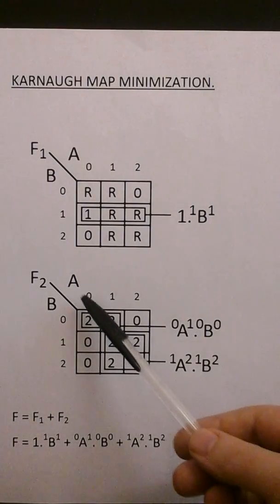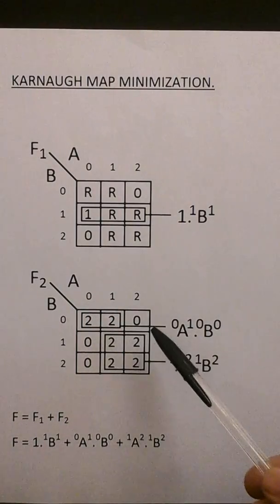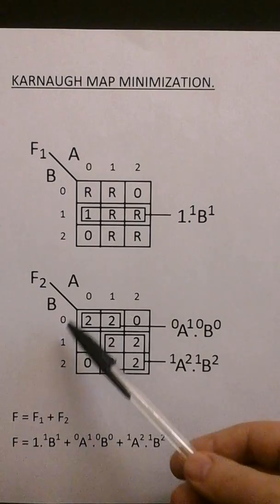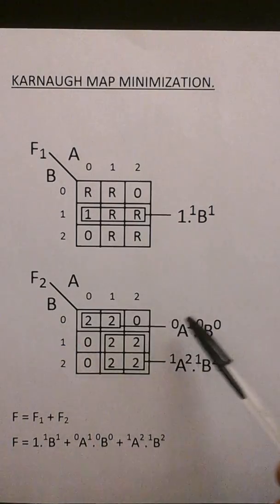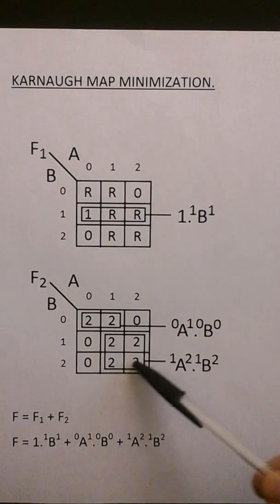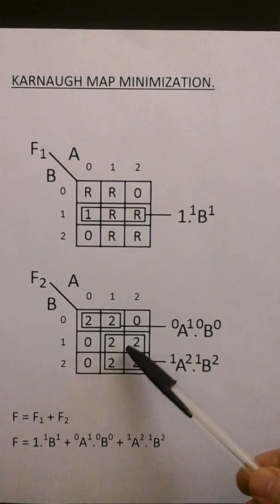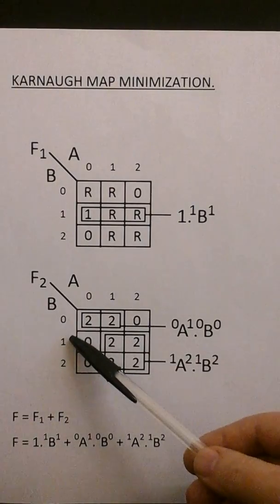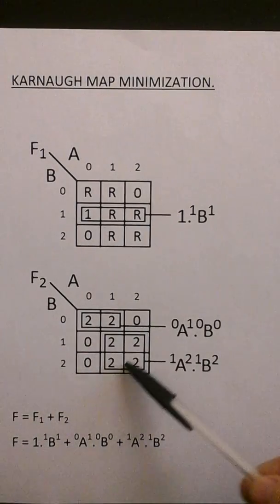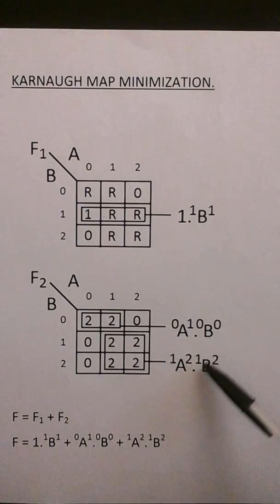For Karnaugh map F2, well for here A covers 0, 1, 0 and 1 so it's A0, 1. B is a single coordinate of 0, 0 so it's B0, 0. And for this loop A covers a 1 and a 2 so it's A1, 2 and the same for B so it's B1, 2 so it's A1, 2 min B1, 2.